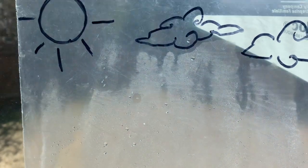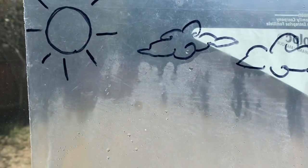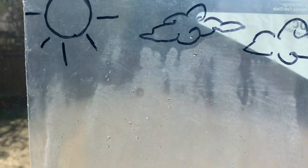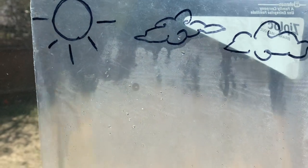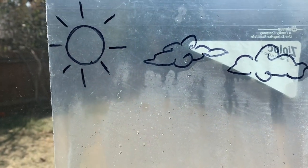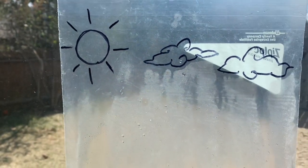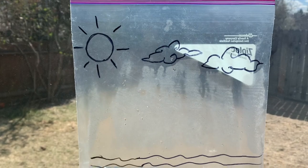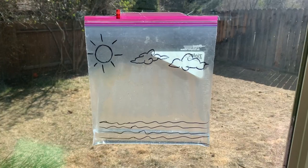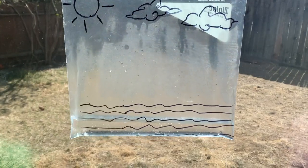This precipitation can be in the form of rain, hail, or snow. In our bag example, we can see the water droplets falling down back into the river. This process is known as collection, so water accumulates back into the river.